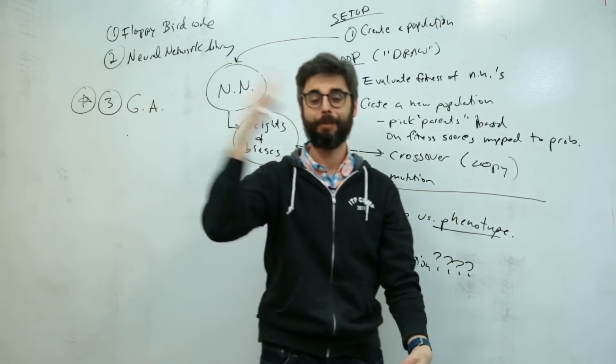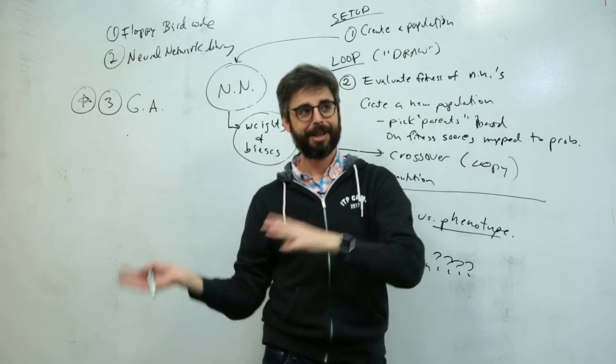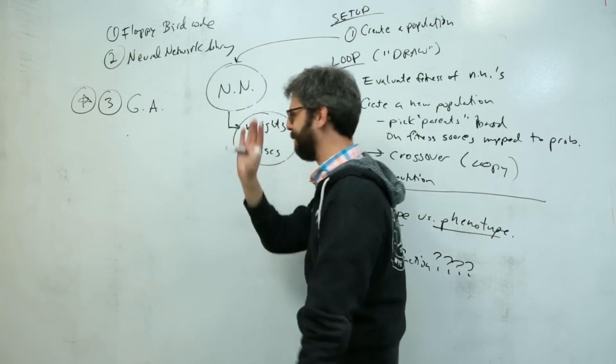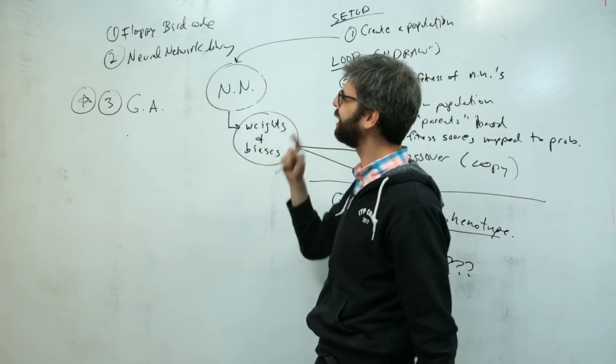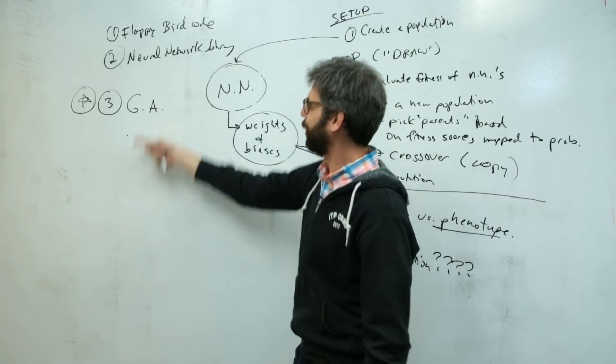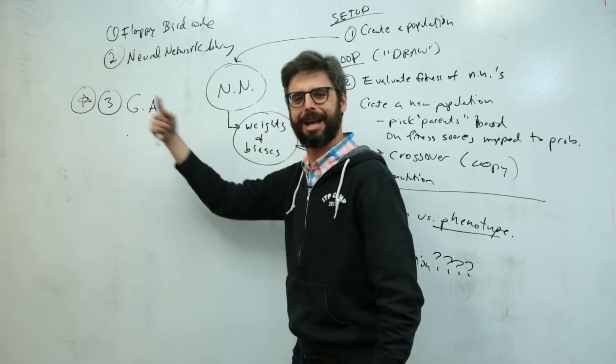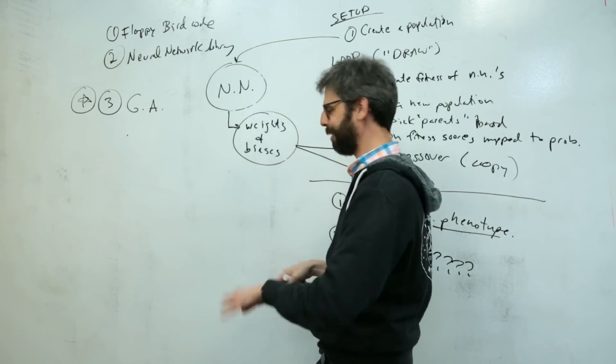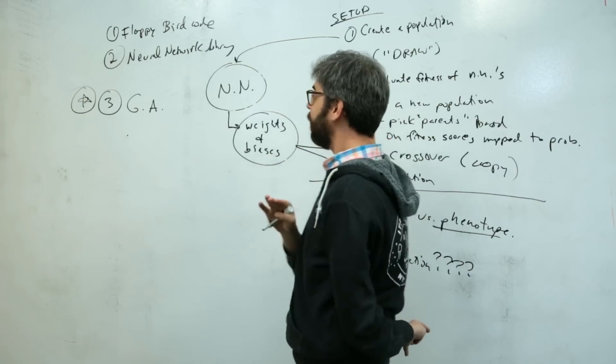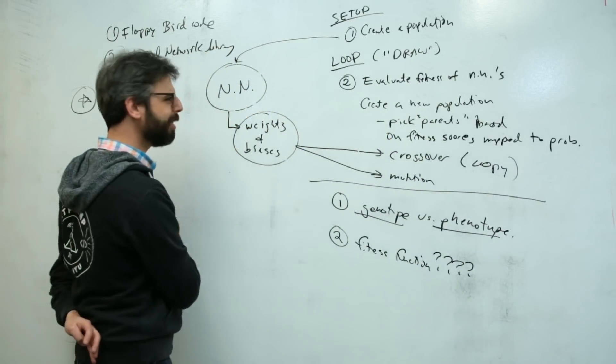That started with the Flappy Bird code that imported the neural network library, that added the genetic algorithm—there's a song going on there that somebody else will finish for me. Passover is coming up.